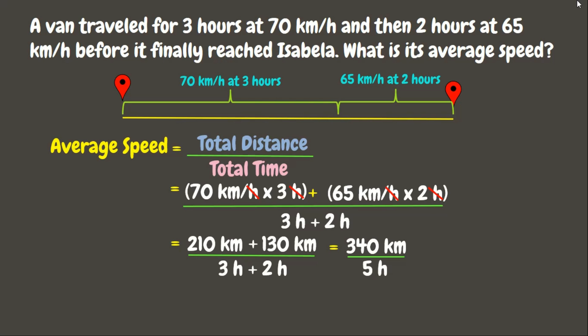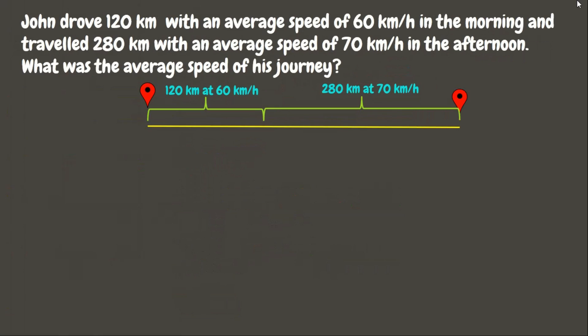Now let us divide: 340 kilometers divided by 5 hours is 68 kilometers per hour. Therefore, the average speed is 68 kilometers per hour.